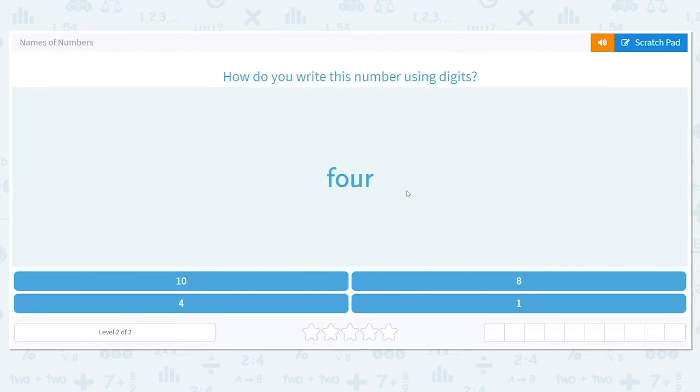Digits are what we use to create numbers. Digits include 0, 1, 2, 3, 4, 5, 6, 7, 8, and 9.